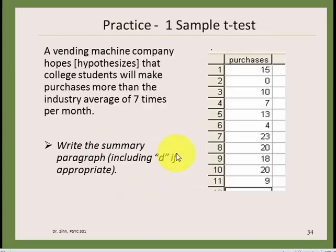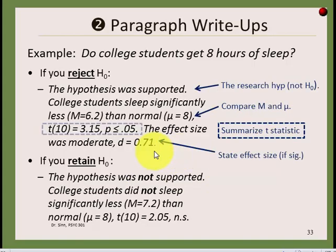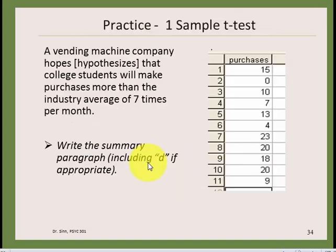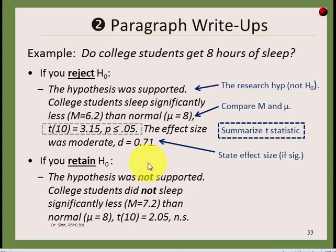The third part — if the result is statistically significant — is reporting the effect size. Using the formula x-bar minus mu divided by the standard deviation, you state something like: the effect size was moderate, because the d value was above 0.5, which is the cutoff for moderate.